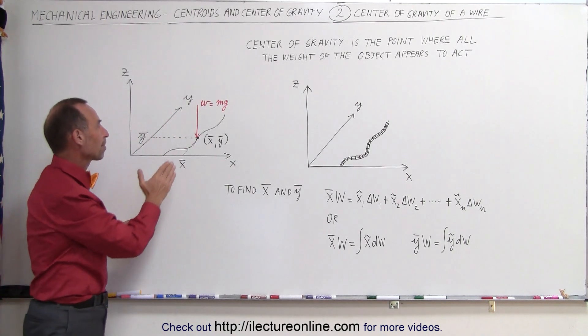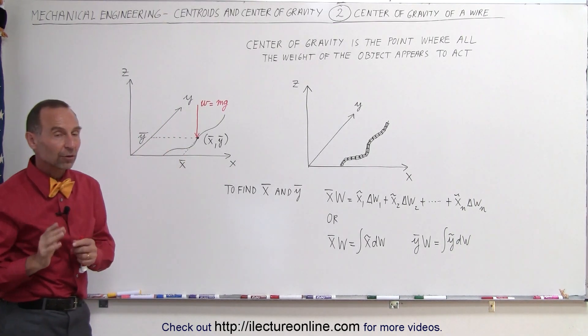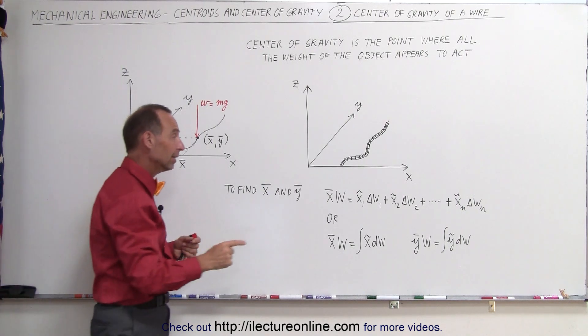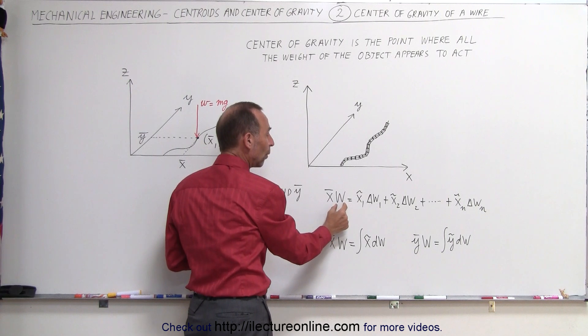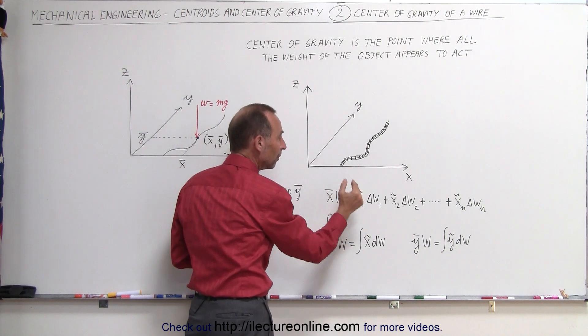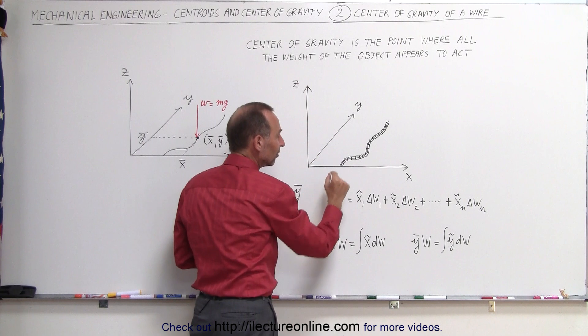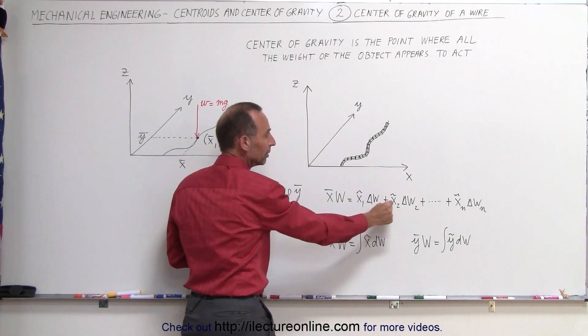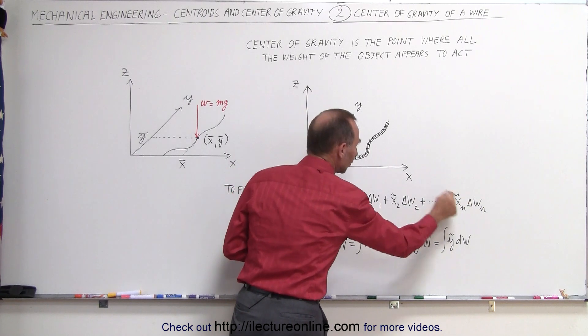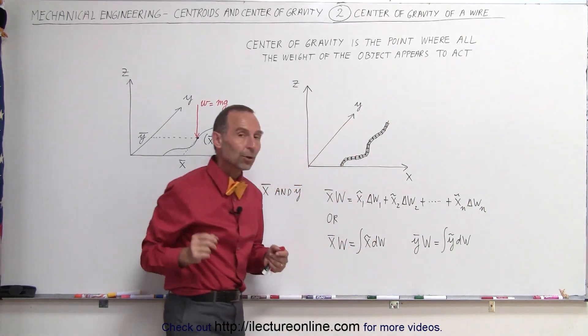Again how do we find the X and the Y coordinate of the center of gravity? The idea is again that the X coordinate of the center of gravity times the weight of the whole wire will be equal to the sum of if you snip up the wire into small little pieces and each little piece has a weight delta W, so delta W1, delta W2, delta W3, all the way to the last one, delta WN.